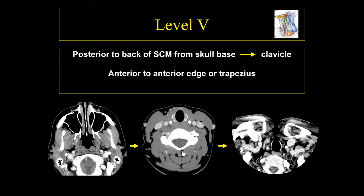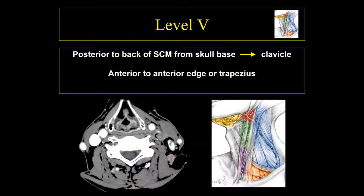The level 5 lymph nodes are geographically the largest area — running from the skull base all the way down to the base of the clavicles. When we connect the line to the back of the sternocleidomastoid muscle, everything posteriorly all the way back to the trapezius muscle is level 5. Unlike levels 2, 3, and 4, level 5 is basically one large geographic area. A metastatic lymph node anterior to that line below the hyoid and above the cricoid is level 3, while posterior it is level 5.